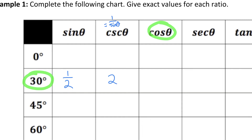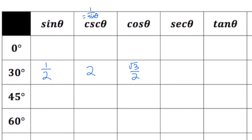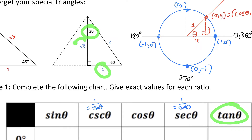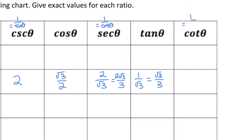Cosine of 30 degrees: cosine is adjacent over hypotenuse, which is root 3 over 2. Secant is just the reciprocal of the cosine ratio, so secant of 30 degrees is the reciprocal of root 3 over 2, which is 2 over root 3. Rationalizing by multiplying top and bottom by root 3 gives 2 root 3 over 3. Tan of 30 is opposite over adjacent, that's 1 over root 3, which rationalizes to root 3 over 3. Cotangent is the reciprocal of tan, so flipping 1 over root 3 gives root 3 over 1, which is just root 3.